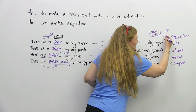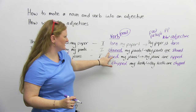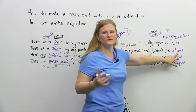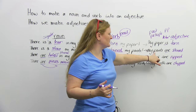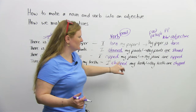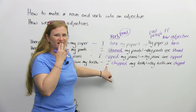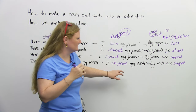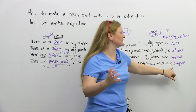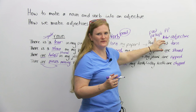We know that this is an adjective because we use the verb 'to be.' Next: 'I stained my pants' — the adjective of 'stained,' because it's an -ED verb, stays the same: 'My pants are stained.' Next: 'I ripped my jeans' — 'My jeans are ripped.' And last: 'I chipped my teeth' — 'My teeth are chipped.' The magic happens when we take the verb and change it into the past participle.